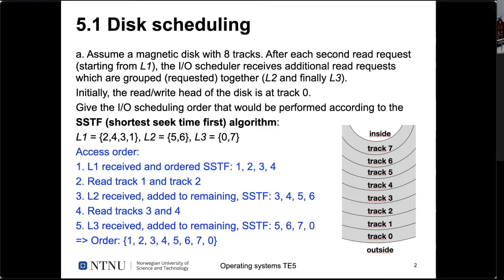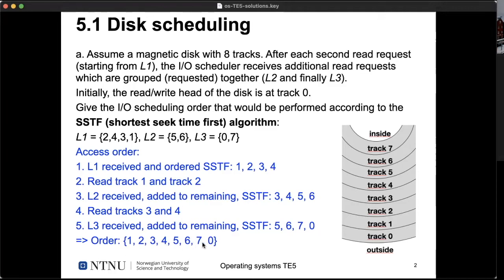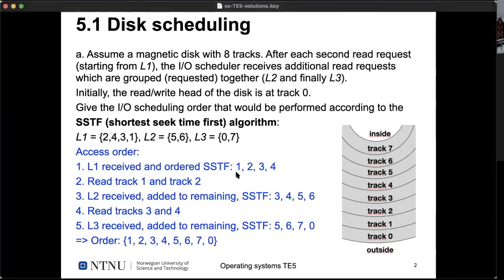So the final SSTF order is simply 1, 2, 3, 4, 5, 6, 7, and then a large seek back to 0. The solution looks almost trivially simple. We couldn't anticipate the request for track 0 at the beginning, so it had to be ordered last after all others were processed.